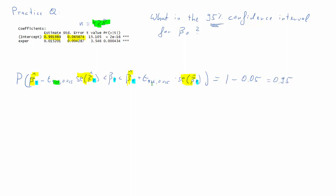We have 428 observations, so 428 minus 2 estimated coefficients gives us 426 degrees of freedom. The 95% confidence interval implies an alpha of 5%. That means when we look for the t-factor, we need the value that cuts off 2.5% — alpha over 2. So let's plug in some values. The estimated coefficient beta 0 hat is 0.9920, and our confidence interval will be centered around that. To get the lower bound we subtract something; to get the upper bound we add something.